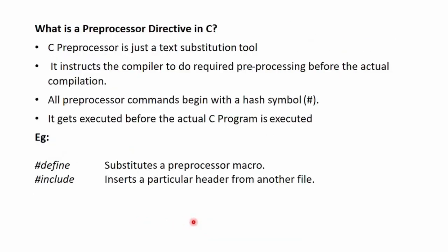Next question: what is the preprocessor directive in C? The C preprocessor is a text substitution tool that instructs the compiler to do the required preprocessing before actual compilation. All preprocessor commands begin with a hash symbol (#). Examples include #define, which substitutes a preprocessor macro, and #include, which inserts a particular header from another file.